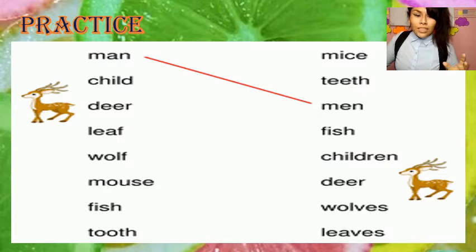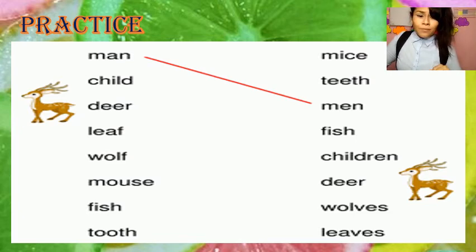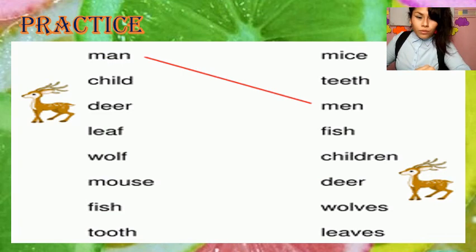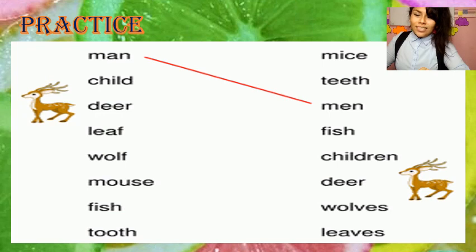Now let's practice a little exercise. Child — children. Deer — deer, same form. Leaf — leaves. Here the word ends in F, so we add V-E-S, right? Wolf — wolves. Mouse — mice. Fish — fish, as we just discussed. And tooth — teeth. Very good, my great students! Now please continue.